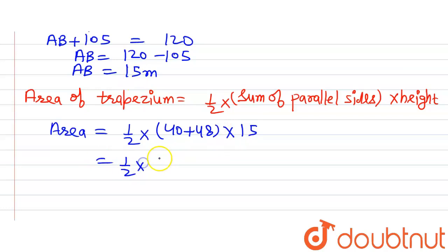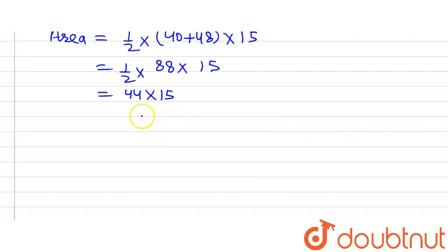Solving it further we will get half multiplied by 88 multiplied by 15 which can be simplified to 44 multiplied by 15. When 88 is divided by 2 we will get 44 and this is equal to 660 meter square. So this is the area of trapezium which we were supposed to find.